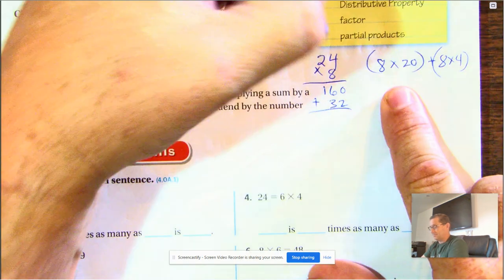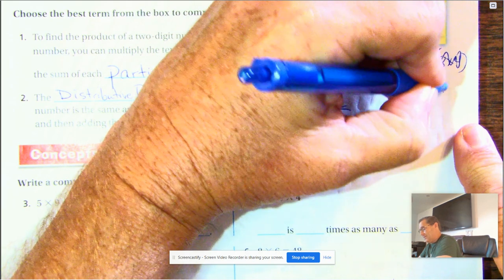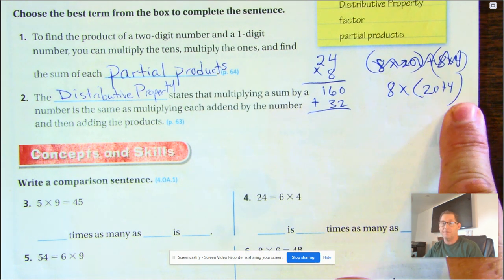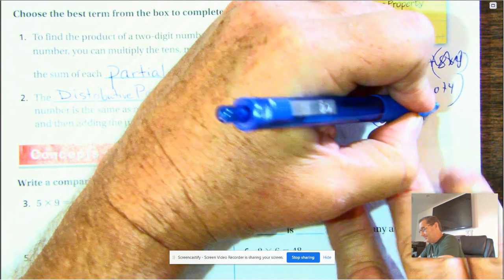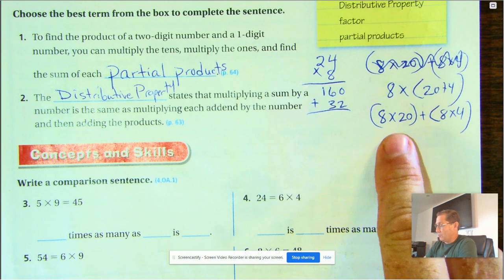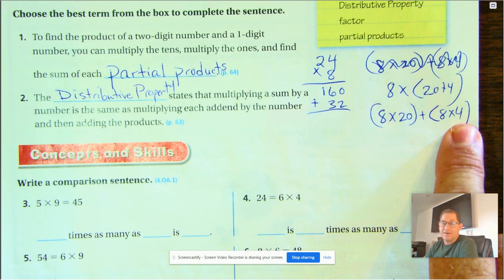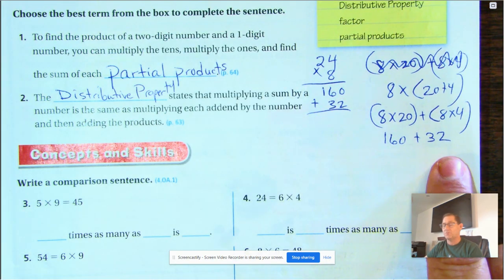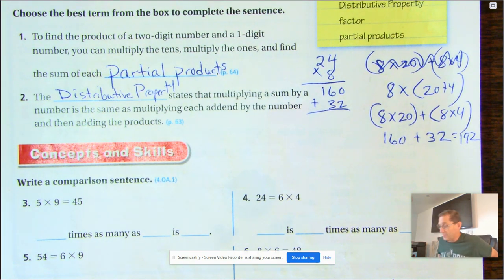It states that multiplying a sum—let me back up, sorry—8 times 20 plus 4. Okay. So multiplying a sum, that's what this is. 8 times the sum of 20 plus 4 is the same as multiplying each addend by the number and then adding the products. So we multiply the 8 by 20, and we'd also multiply the 8 by the other addend, 4. And then we would add up the products of those two problems, 192. So that's the distributive property for this one.